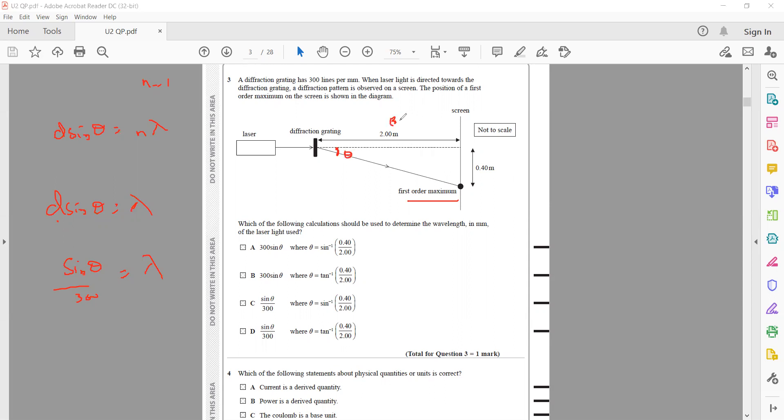This angle is theta. This one is the base and perpendicular, so tan theta equals perpendicular divided by base. Tan theta, the perpendicular is 0.4 and the base is 2, so theta equals tan inverse of 0.4 divided by 2. We'll get theta this way, and then sin theta divided by 300 will get the wavelength. So D is the right answer.